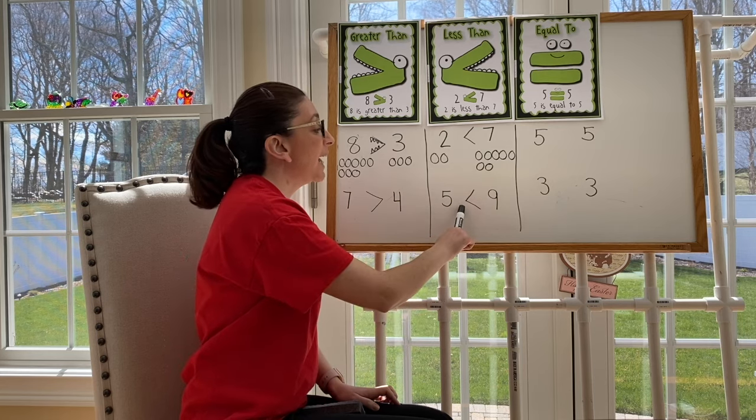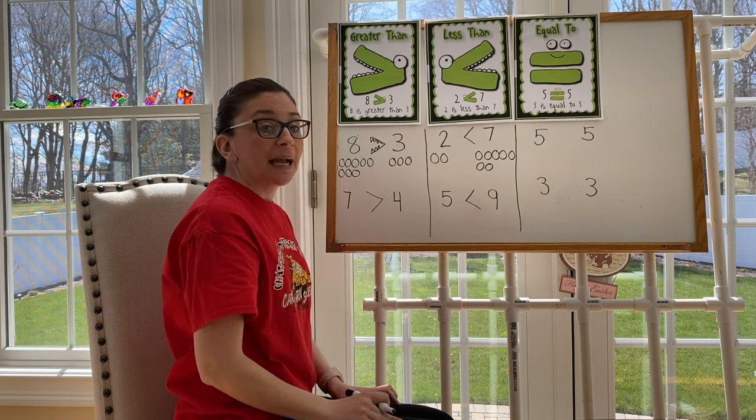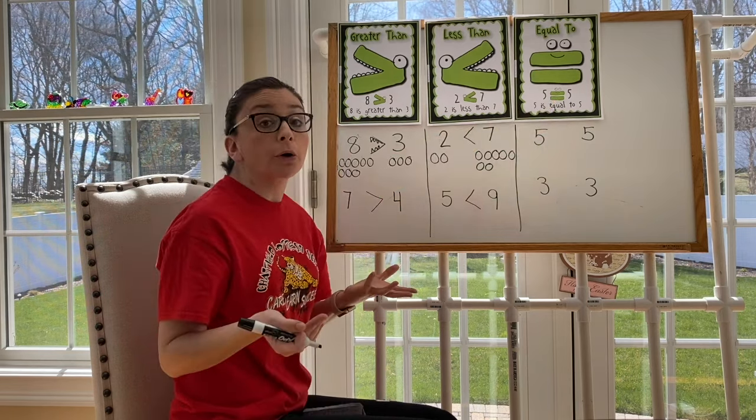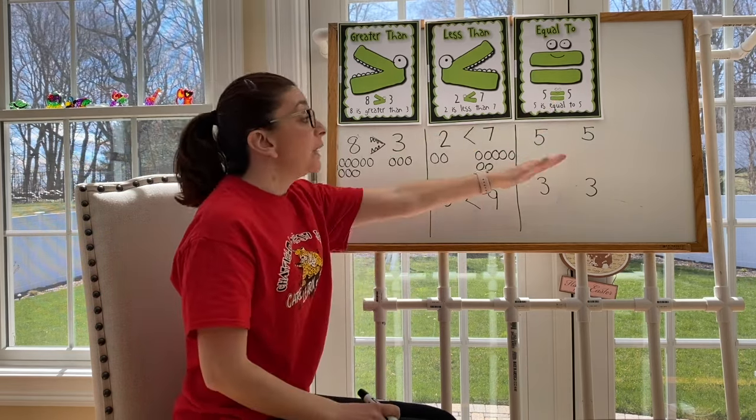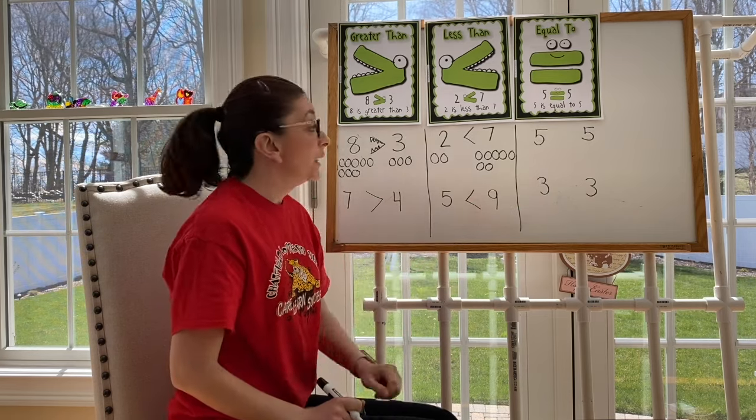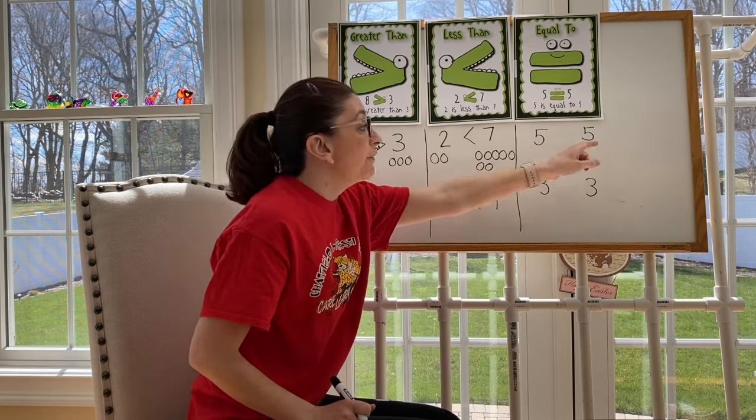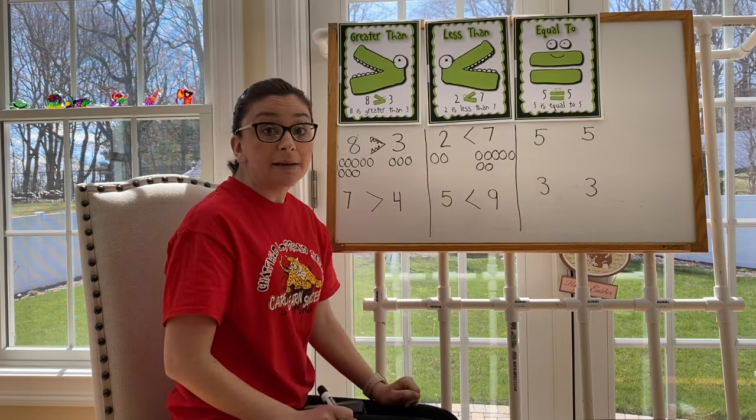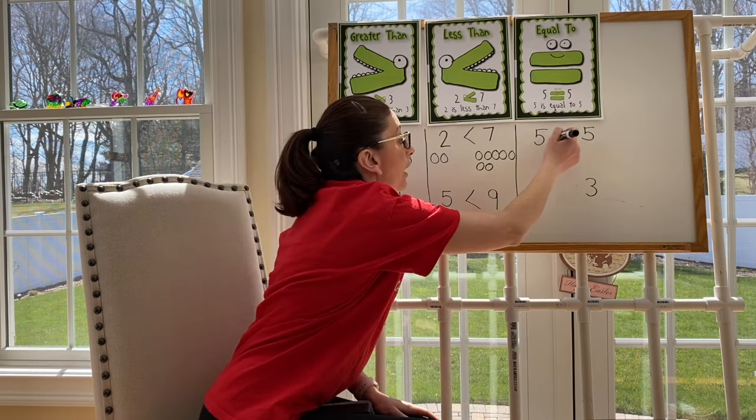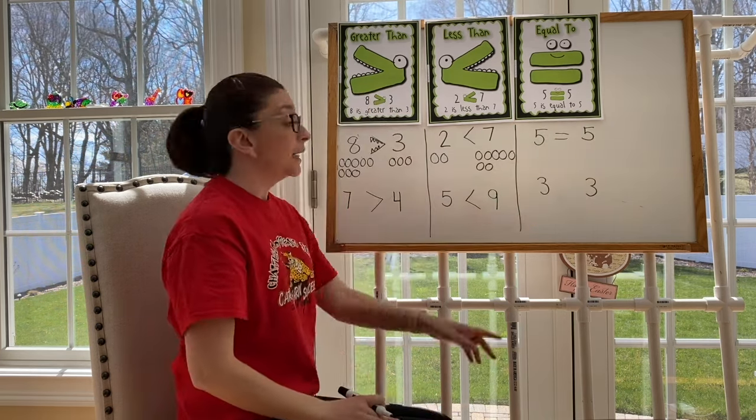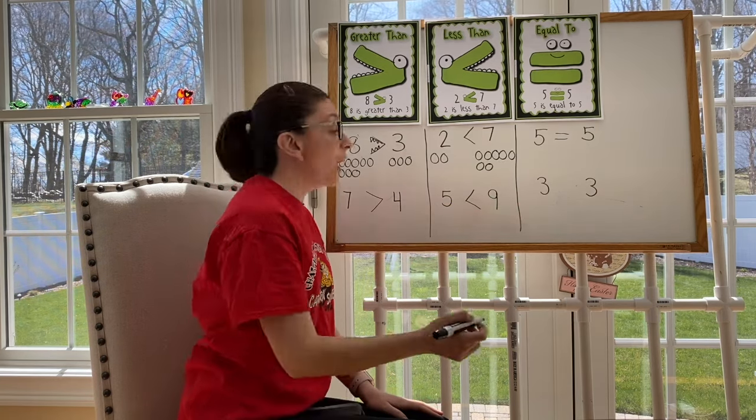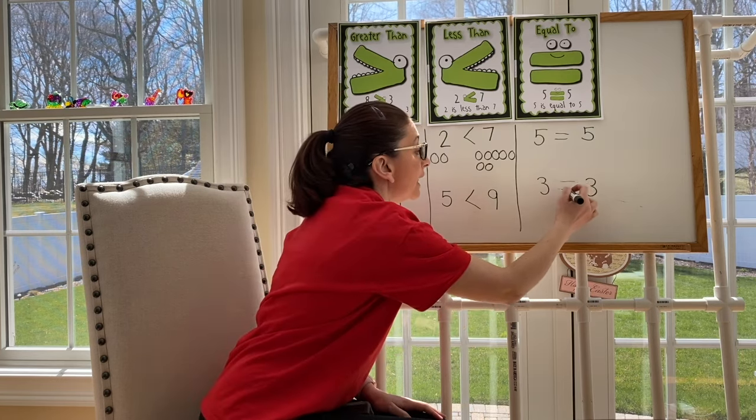Now let's talk about equal. We're all familiar with the word equal. Equal means that both numbers are exactly the same. Five and five. Are they the same? They are. So we would say that they are equal. Three and three. Are they the same? They are. So we would say they are equal.